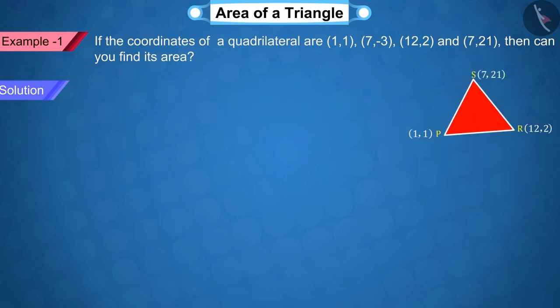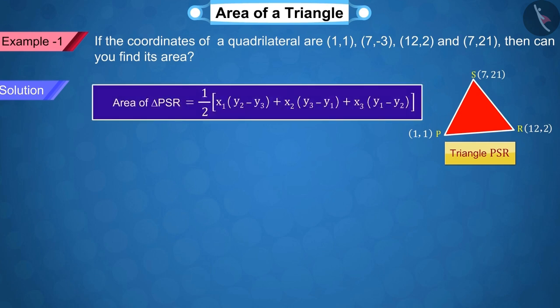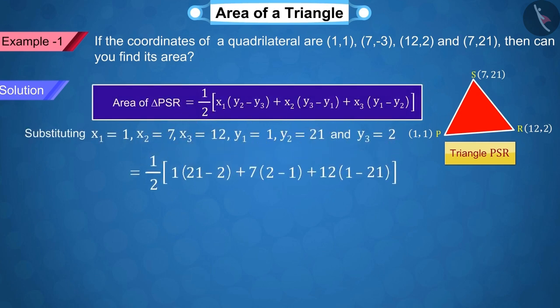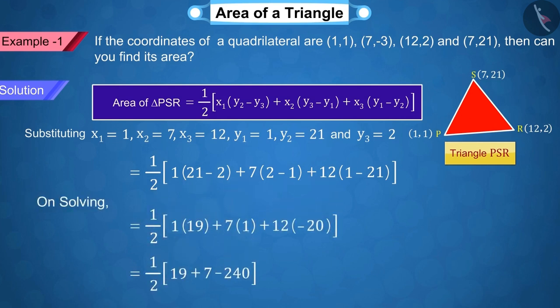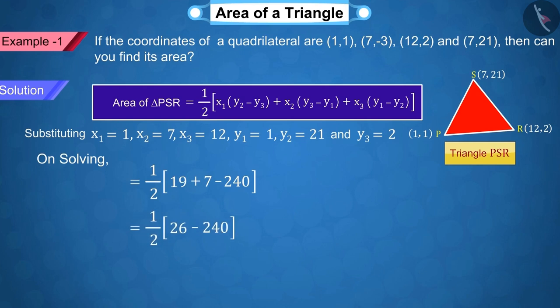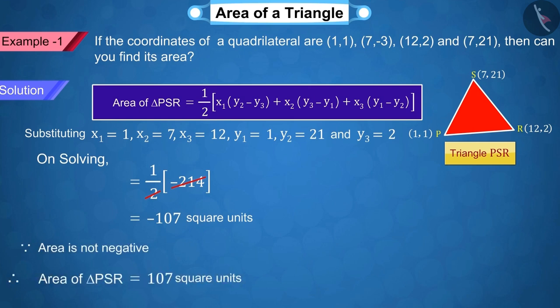Can you find the area of triangle PSR? Correct! Similarly, when we calculate the area of the triangle PSR, we get it as 107 square units.